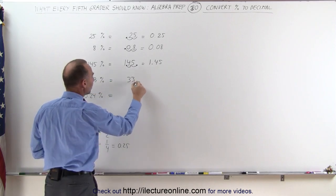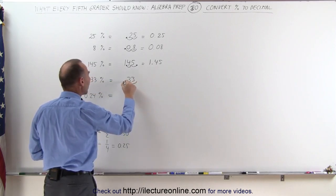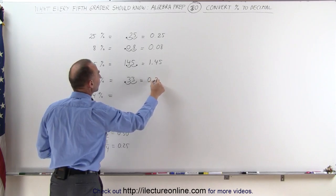33%, we write down the number, we move the decimal place over two spots. This is equal to 0.33.